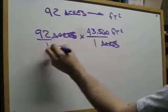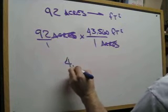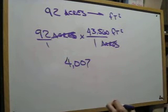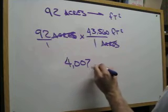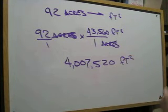Multiply 92 times 43,560, and we end up with our square feet, which is in this one is 4,007,520 square feet.